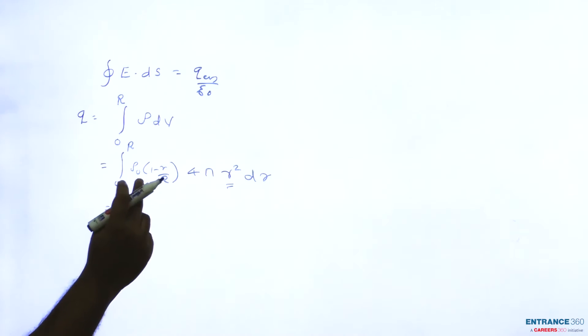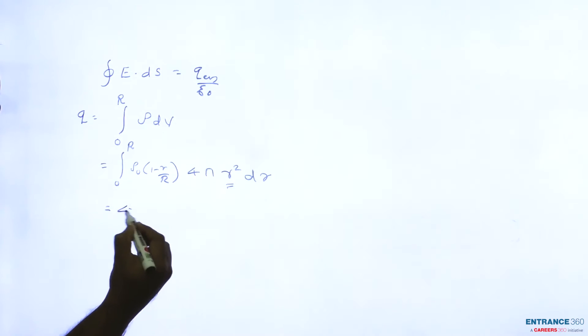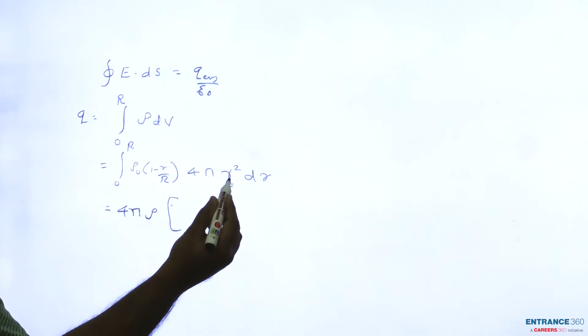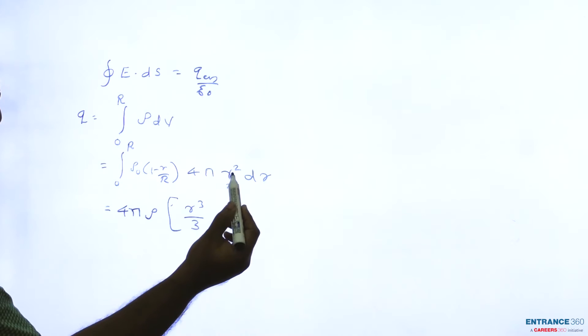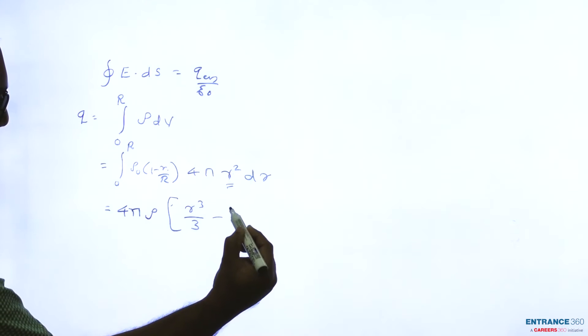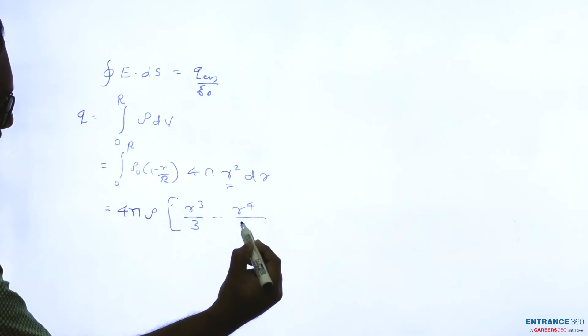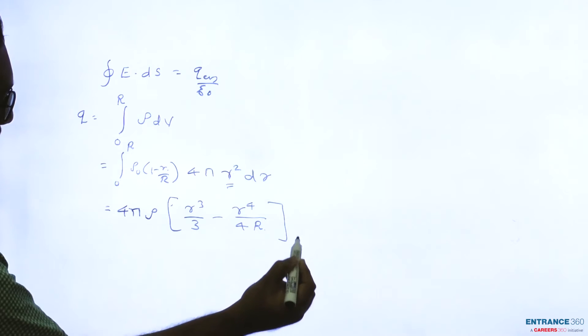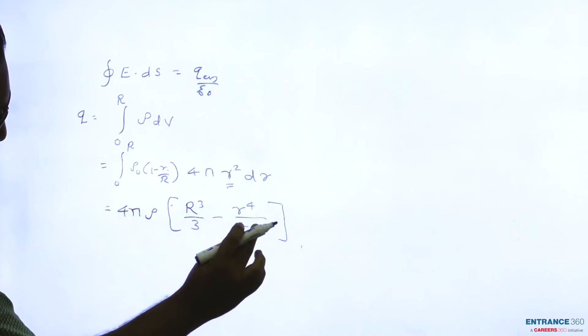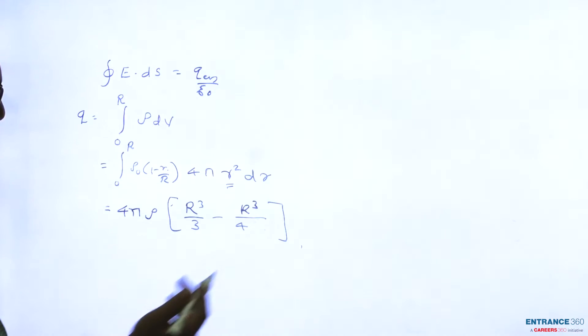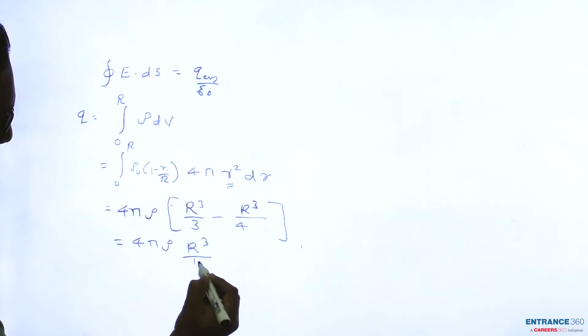Now, we can take the constant outside: 4 pi rho_0 into, this r squared will come here and the integration of r squared is r cubed by 3, and this r squared multiplied with r is r cubed, so integration of r cubed is r raised to 4 by 4. After applying limits from 0 to R, it will become r cubed by 3 minus r cubed by 4, which equals 4 pi rho_0 into R cubed by 12. This is the total charge enclosed.